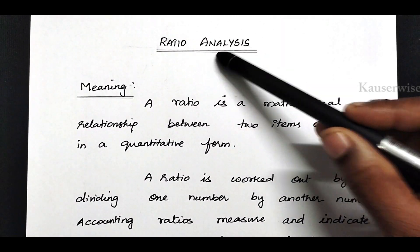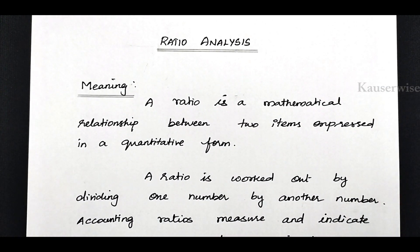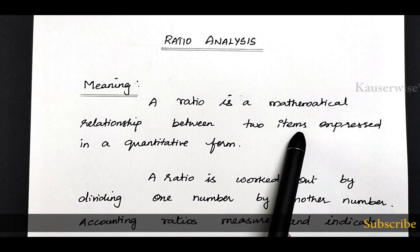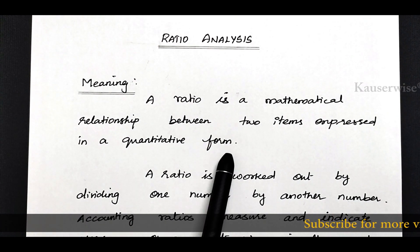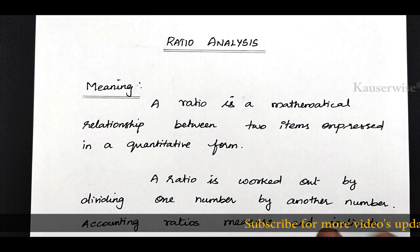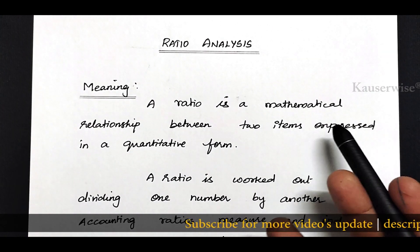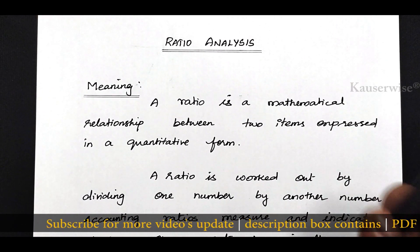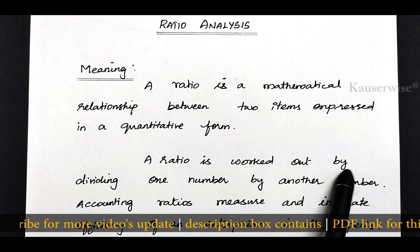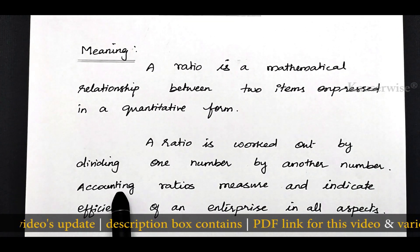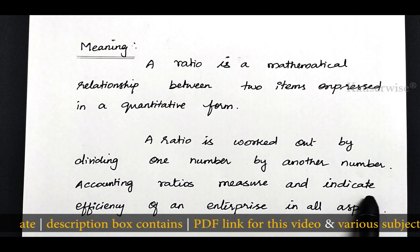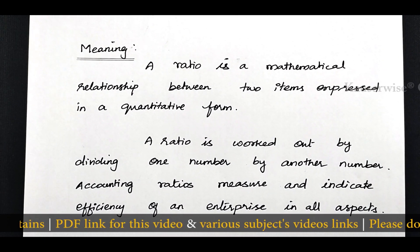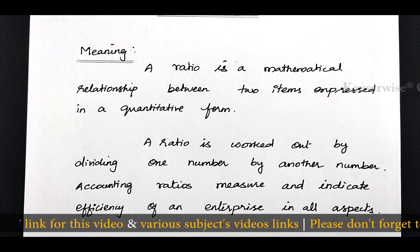Before we see the numerical problem on ratio analysis, let us try to understand the basic concepts. What is the meaning of ratio? A ratio is a mathematical relationship between two items expressed in a quantitative form. Ratio analysis involves the process of computing, determining and presenting the relationship of items and group of items of financial statements. A ratio is worked out by dividing one number by another number. Accounting ratios measure and indicate the efficiency of an enterprise in all aspects. Ratio analysis is a tool to analyze and interpret the financial statement.